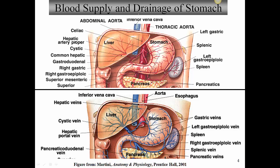Let's first talk about the blood supply and drainage of the stomach. The main blood supply of the upper abdominal organs is called the celiac trunk or celiac artery — a main branch of the abdominal aorta. This splits into several arteries, for example the left gastric artery and the gastroduodenal artery, which becomes the right gastric artery. The celiac trunk is the main supply for the upper abdominal organs, like the liver, stomach, and pancreas.